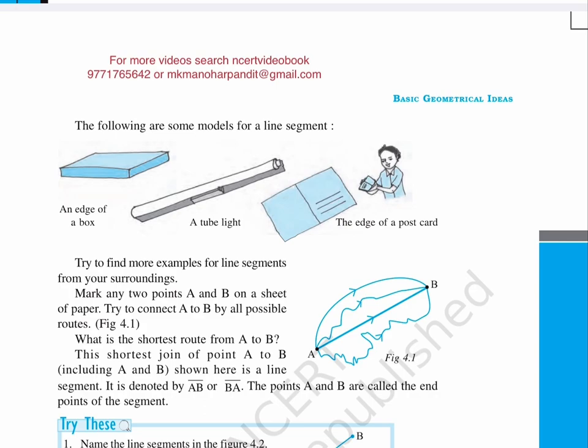Mark any two points A and B on a sheet of paper. Try to connect A to B by all possible routes. Figure 4.1 shows the same. Points A and B and the different ways to connect them. What is the shortest route from A to B?